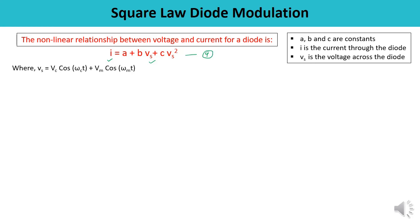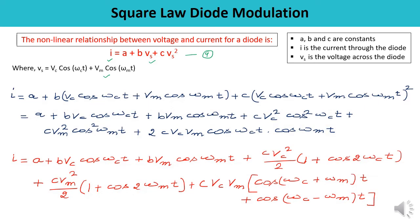Substituting vs into the equation gives: i = a + b·(vc + vm) + c·(vc + vm)². Expanding the squared term using the identity (A+B)² = A² + B² + 2AB, we get terms for Vc²·cos²(ωc·t), Vm²·cos²(ωm·t), and the cross term 2·Vc·Vm·cos(ωc·t)·cos(ωm·t).